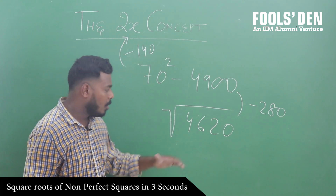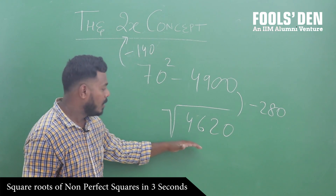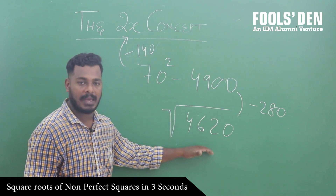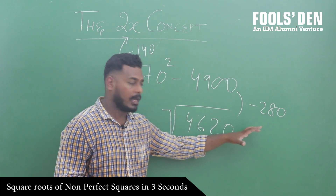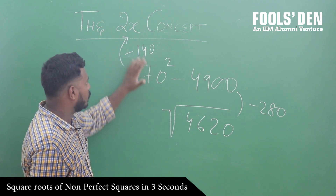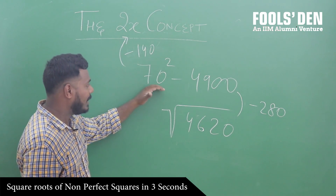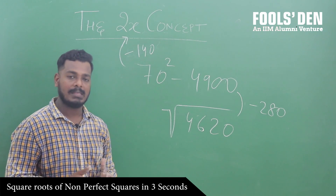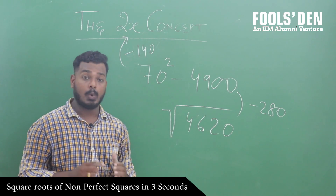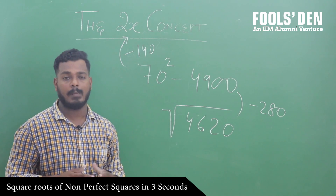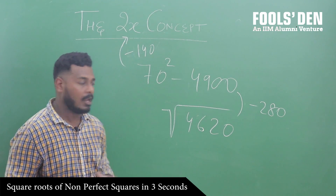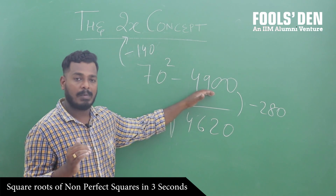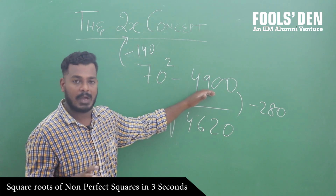Let's go to the last example of this video: finding square root of 4620. 4620, 70 का square 4900 के पास है, और इससे थोड़ा सा कम है — करीबन 280 कम है. Using the 2x concept, जब हम 70 से ऊपर जाते हैं तो हर अगला square करीबन 140 बढ़ता है. Similarly, अगर आप 70 से नीचे जाएंगे, तो हर पिछला square करीबन 140 कम होगा. 70 के square में अगर मैं 140 माइनस कर दूँ तो 69 का square आएगा approximately, उसमें 140 और कम कर दूँ तो 68 का square आएगा approximately.